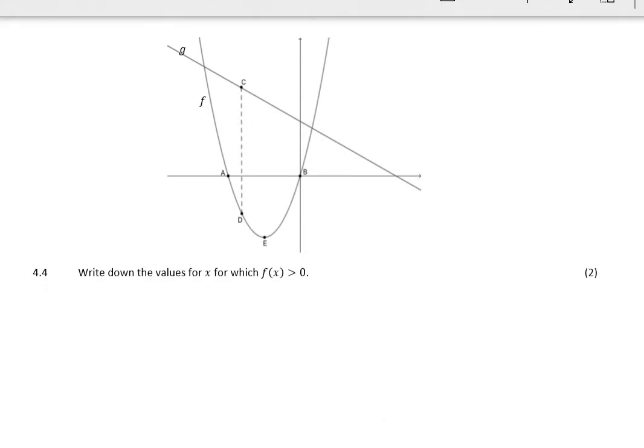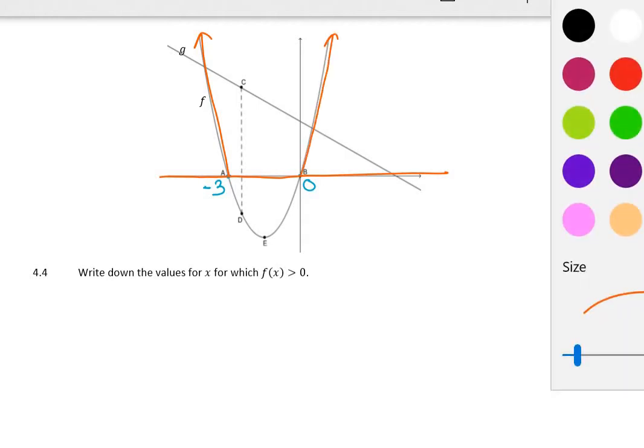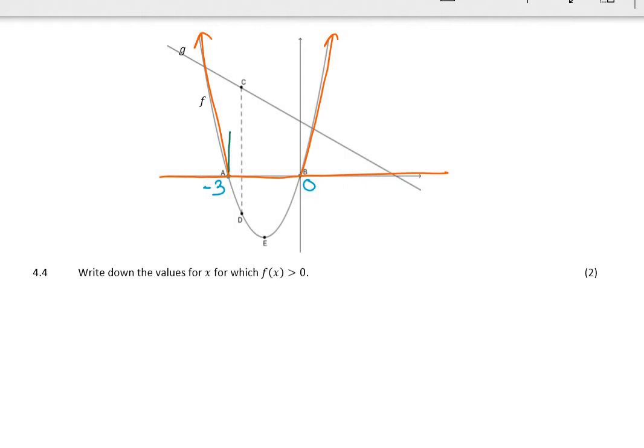Right, determine the values of x, for which f(x) is greater than 0. Well, this was at negative 3, and this was at 0, and they're asking, where is the parabola greater than 0? So that's when it's equal to 0. Now, that part of the parabola is greater than 0, or that part is greater than 0. So my answers are going to be, it's from negative 3 downwards, or from 0 upwards.